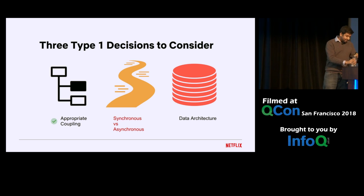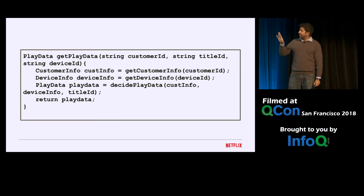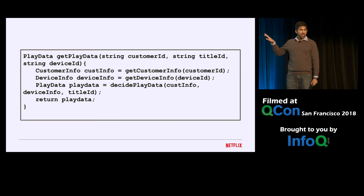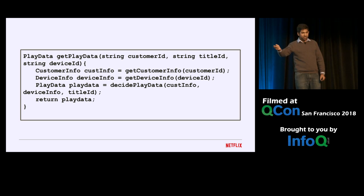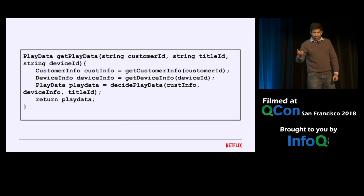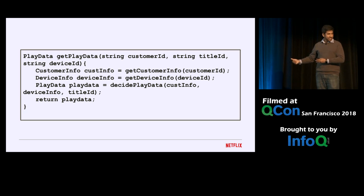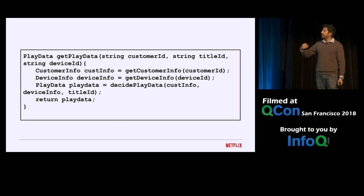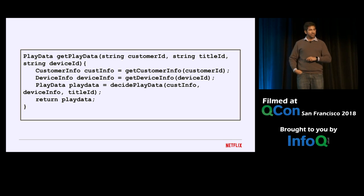The next type one decision is around synchronous and asynchronous choices. To understand this, let's consider an example. Say we have an API called get play data — it takes in a customer ID, title ID, and device ID. Using the customer ID, it talks to the customer info service to fetch customer info. Using the device ID, it talks to the device service to get device info. And using the enriched customer info and device info, it talks to the playback decision service to decide the playback data and return the play data.